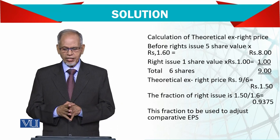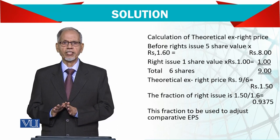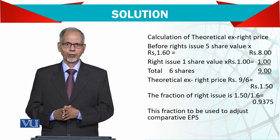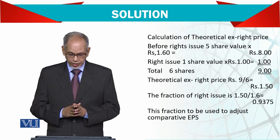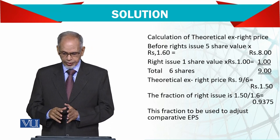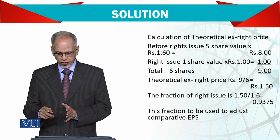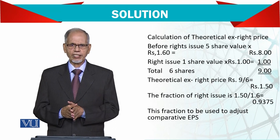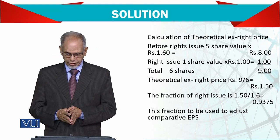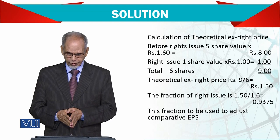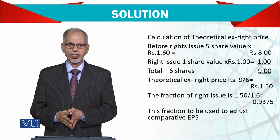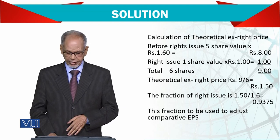So the Theoretical Ex-Rights Price is 1.5. The fraction for the rights issue adjustment is 1.5 over 1.6. This fraction is used to adjust the comparative earnings per share for the prior year.